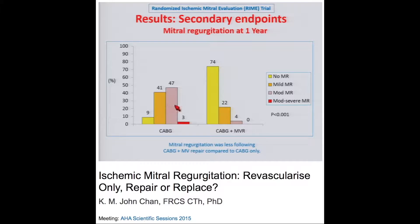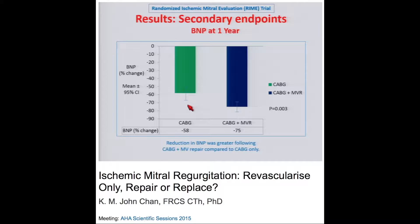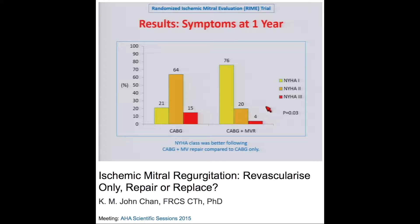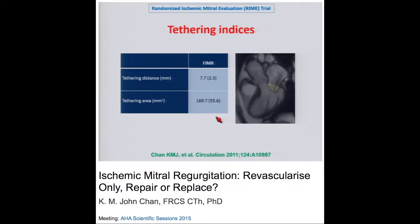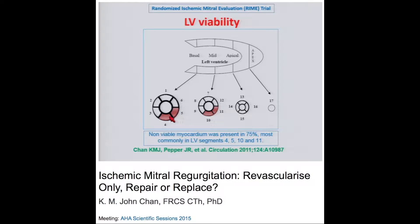Those who had revascularization alone mostly continued to have moderate MR. BNP levels also reduced more in the repair group. The median NYHA class was class 1 in those who had valve repair compared to class 2 in those who had CABG alone. The tethering indices in this group were 7.7 millimeters — tethered but not severely so — and 75% had non-viable myocardium predominantly in the inferior lateral wall, assessed by cardiac MRI.